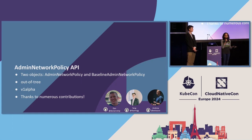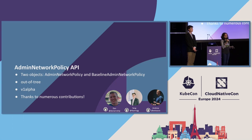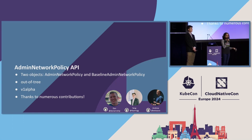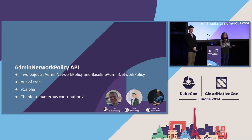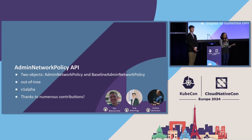Let's talk about the admin network policy API — the new API. Remember how I mentioned that the network policy API was designed for developers? This one was designed for admins, to cater to their needs at the cluster level. We have two CRDs as part of this feature: the admin network policy API and the baseline admin network policy API. Both are out of tree — not in the core kubernetes/kubernetes repo — so you need to opt into them. They are currently at V1 alpha one. The KEP merged two years ago and the API has been around for a year and a half.